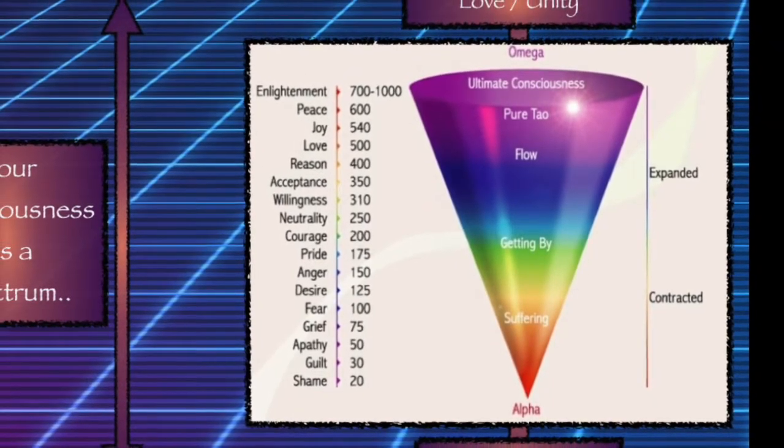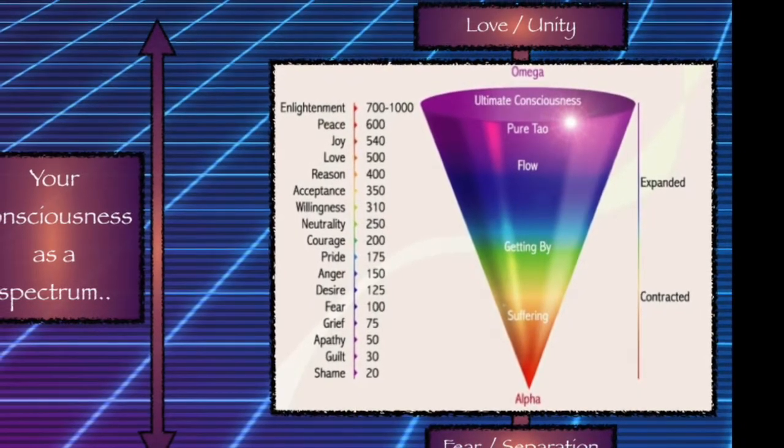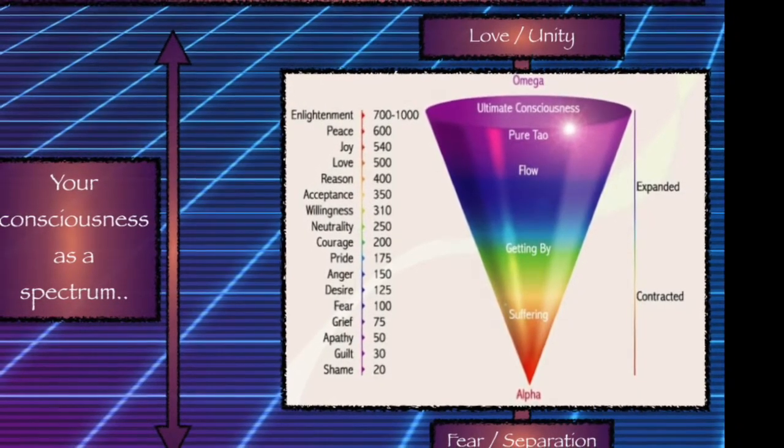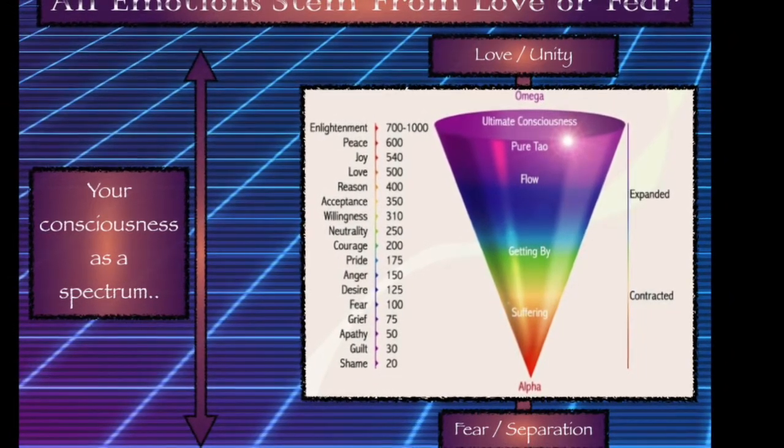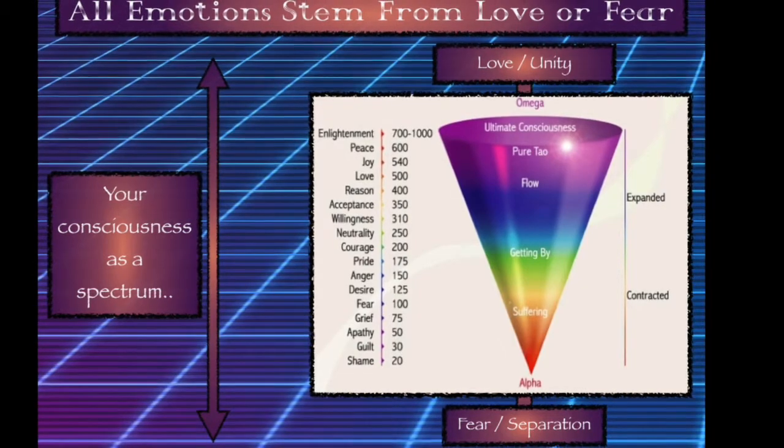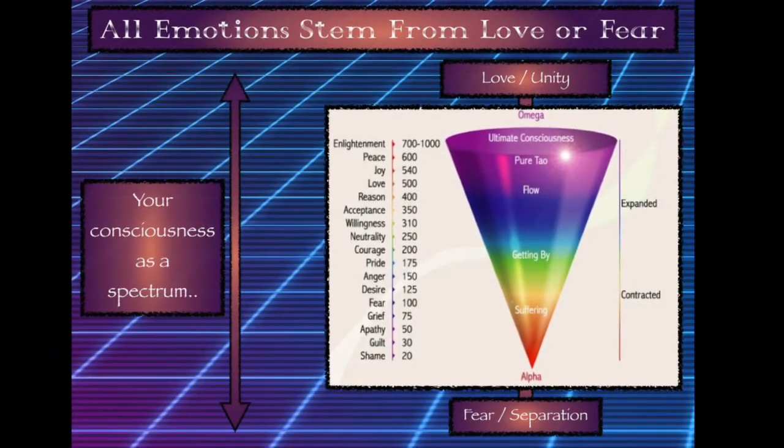The amount of love that one has within their being determines where they land on this gradient, and the amount of fear does as well. So we're in this constant state of flux. It's an expression of the amount of fear versus love that we're expressing.